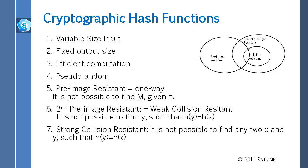Looking at the Venn diagram, everything that is collision resistant is obviously also second pre-image resistant, because if you cannot find any two X and Y's, then given an X you also cannot find a Y. Some things which are pre-image resistant may be second pre-image resistant and some may not be — it's not a proper subset relationship. The Venn diagram shows there are some hashes which will pass test 5 but will not pass test 6.